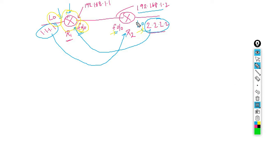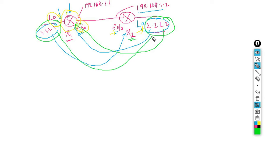For example, R2 knows the 2.2.2.2 network. When we configure the routing protocol, R2 will send that information to R1. And R1 knows 1.1.1.1, so R1 is going to exchange that information to R2. So R2 will know where 1.1.1.1 is, and R1 will know where 2.2.2.2 is. Without a routing protocol, R1 doesn't know about 2.2.2.2 and R2 doesn't know about 1.1.1.1.